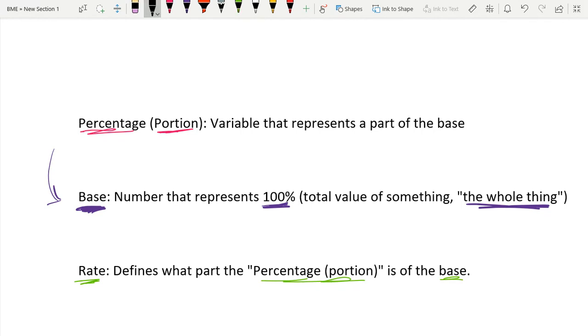So let me just give you a quick example. If our base was 10, and our rate was 50%, then our percentage portion would be a variable that represents a part of the base. So if we're taking 50% of 10, our portion would just be 2.